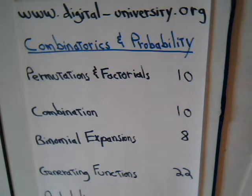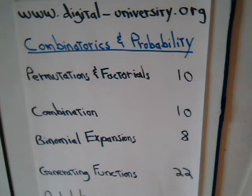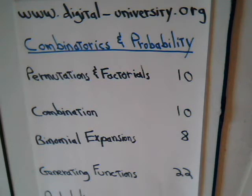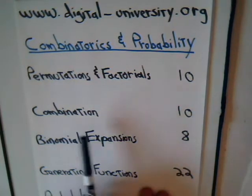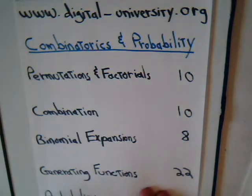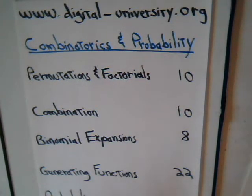This is video number seven from digital-university.org. In this video, we want to consider an example from conditional probability. As a reminder, for a lot of the probability videos, we're drawing upon results that we obtained in earlier videos, particularly the different types of combination problems and permutation problems that we solved.